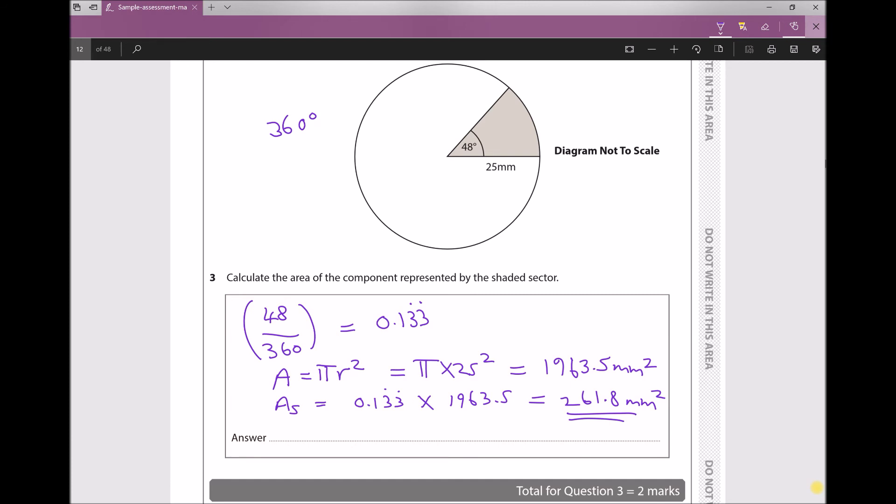Now if you're comfortable with what we've done there, you could actually do that in one go on your calculator, and I'll write this in my answer line. You could do 48 over 360 for the fraction of the circle times pi times 25 squared, and that would still give you the same answer, 261.8 millimeters squared, but it would save you quite a bit of time in the exam.